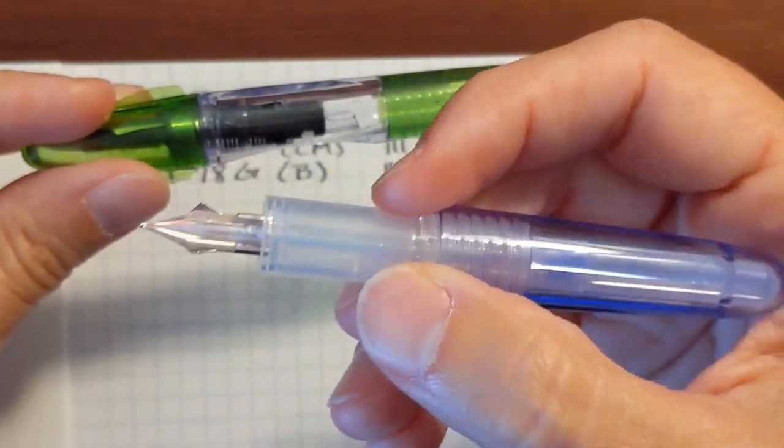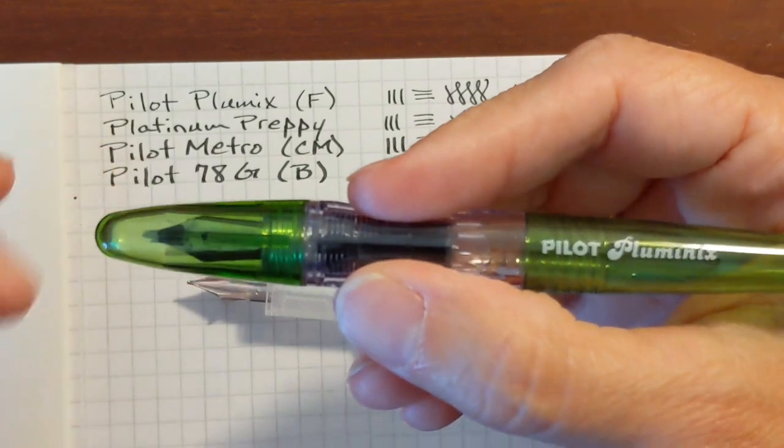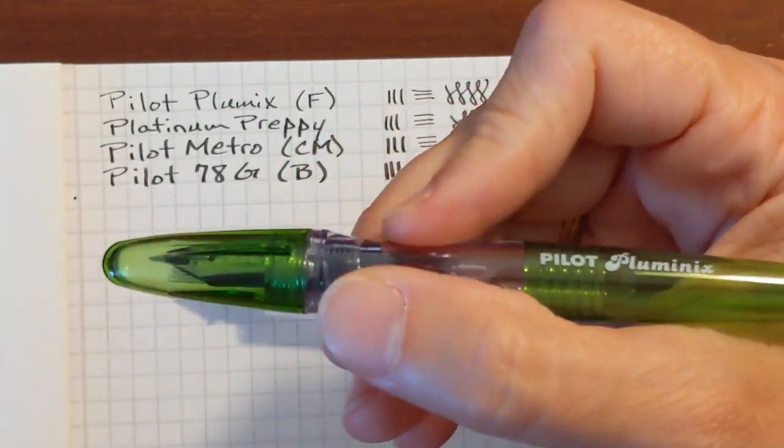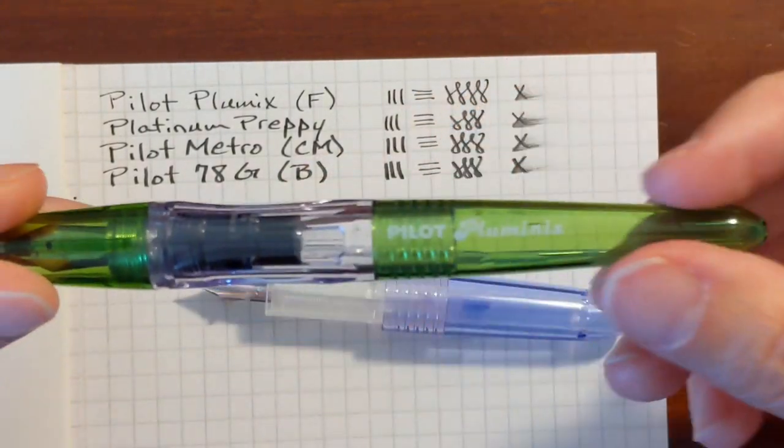The Petite One has the cylindrical section and the Pluminix has a very comfortable faceted section, but it's round on bottom. That's just very comfortable.